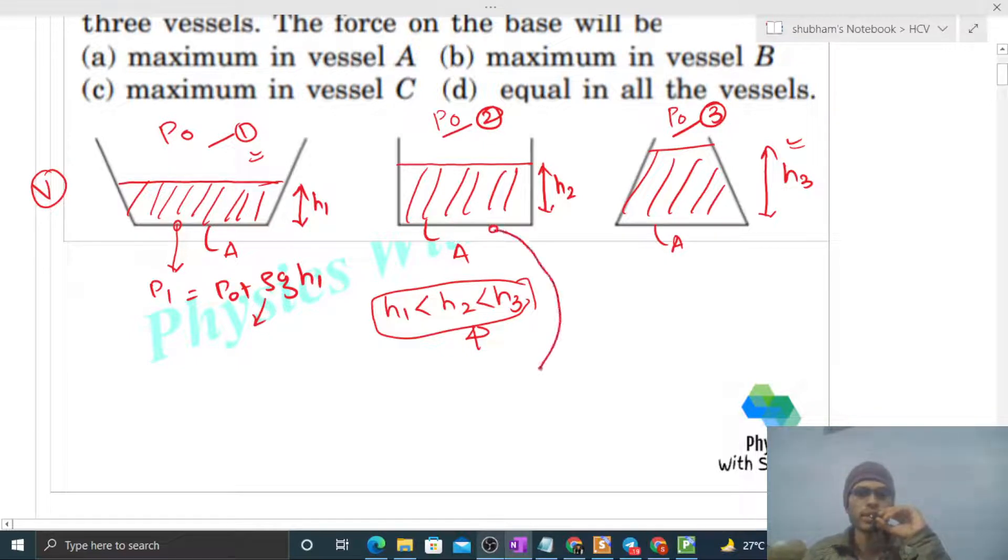Similarly, the pressure at the base area here will be p-naught plus rho times g times h2. And here at vessel 3's base area, the pressure is p-naught plus rho times g times h3.